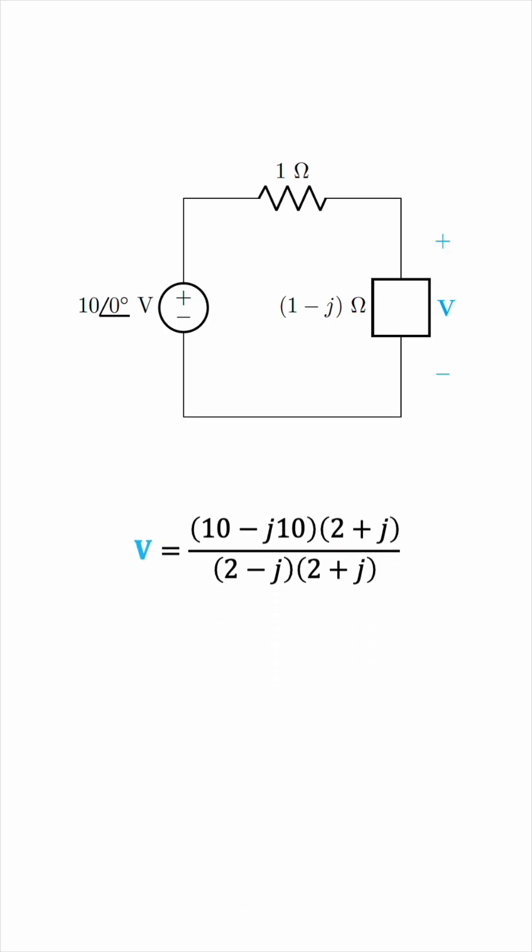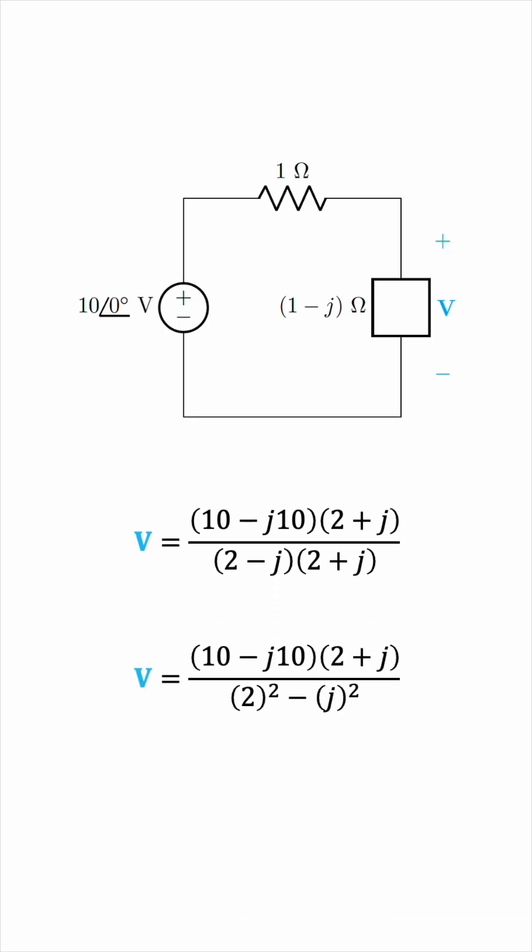And expanding this difference of squares gives us 2 squared minus J squared. 2 squared is just 4, and J squared is negative 1. So the denominator becomes 4 plus 1, which is 5. And now we can expand the numerator, effectively giving us the real part and imaginary part, because we don't see any J in the denominator anymore.